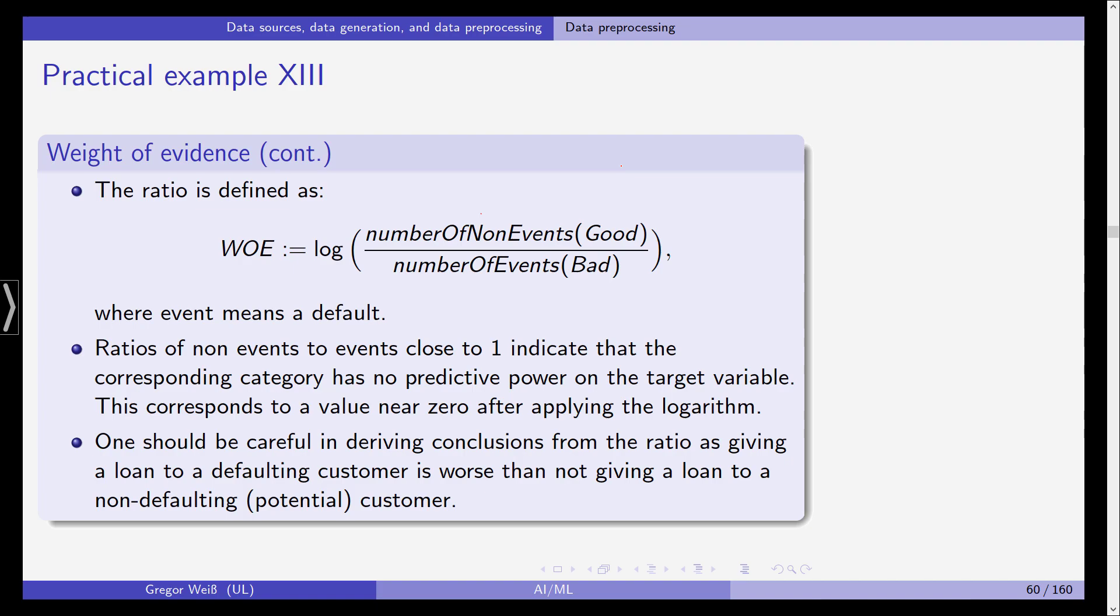Now ratios of non-events to events close to one indicate that the corresponding category, the covariate category has no predictive power on the target variable. This corresponds to a value near zero after having applied the logarithm.